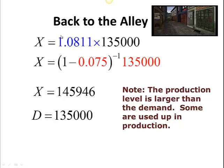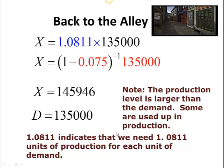Another way to interpret this economically: the 1.0811 tells me that I need 1.0811 units of production for each unit of demand. We know the number of units of demand, and this factor tells me for each unit of demand how much production I need. It's a number bigger than 1, which makes sense because production must be bigger than demand since we use some up in the production process.